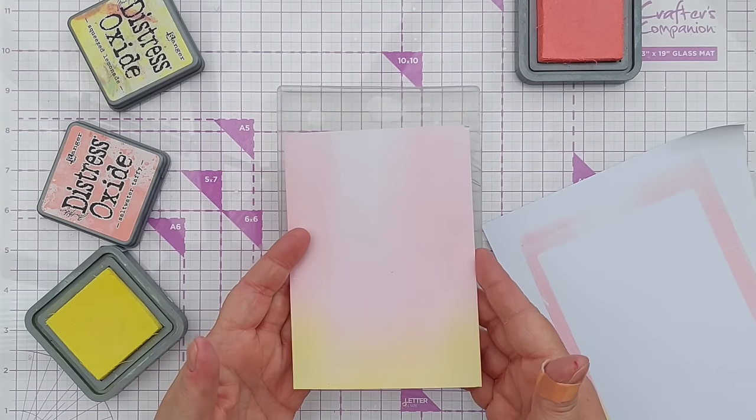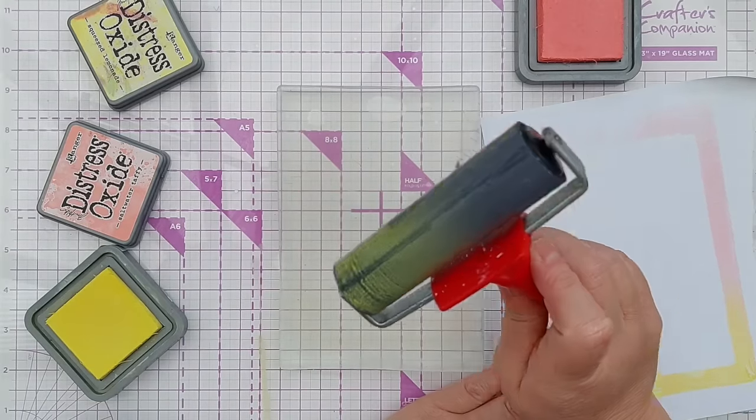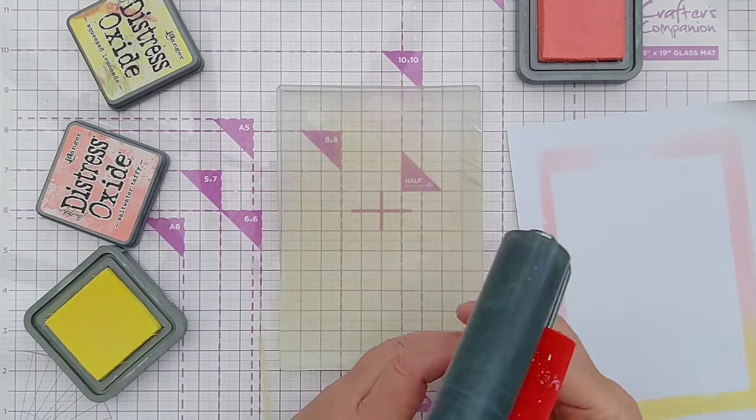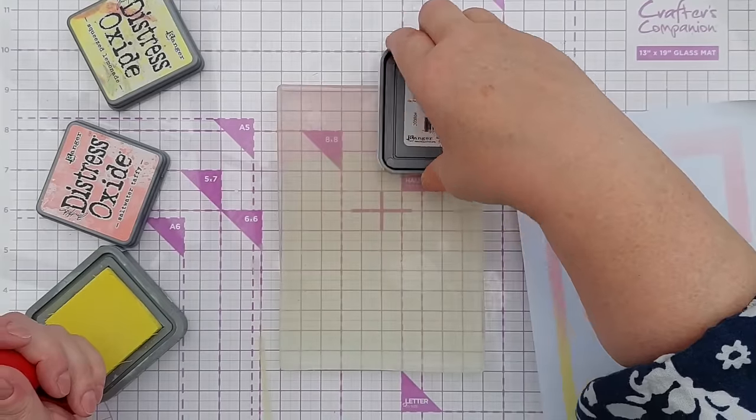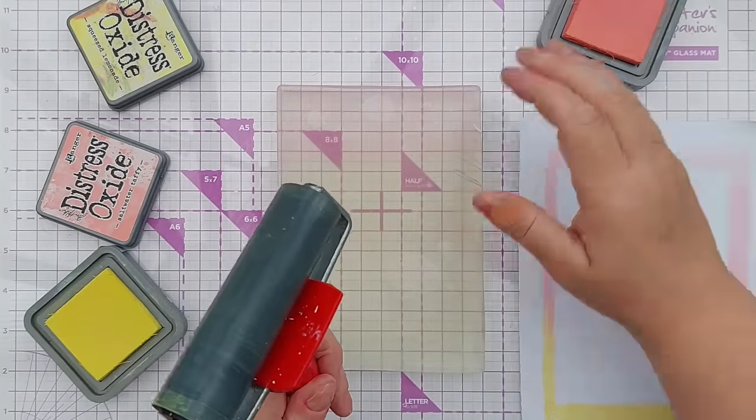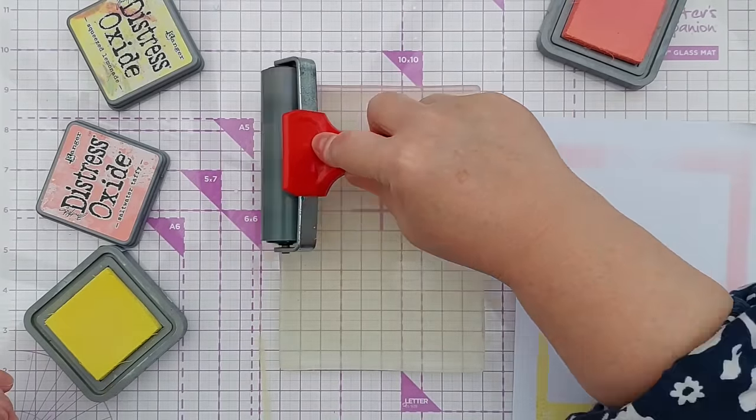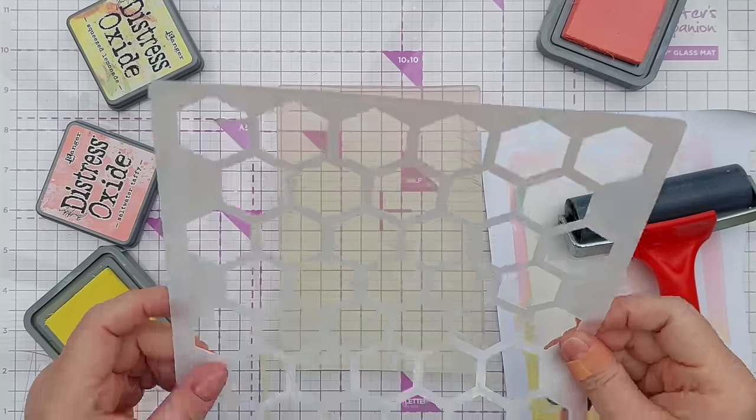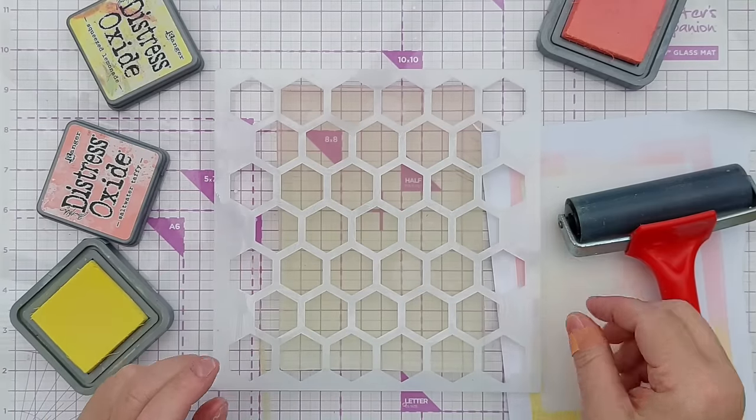So there we have a lovely saltwater taffy and squeeze lemonade blendy panel. Now I can put this back on here. I find that less is more when it comes to adding distress oxides to my gel plate. If I put too much down it can bead up and give a beaded appearance, but if I put as little down as I think I can get away with, then I get a better finish.